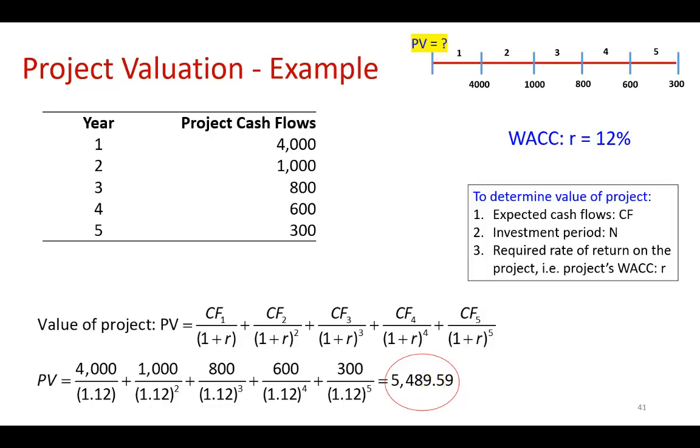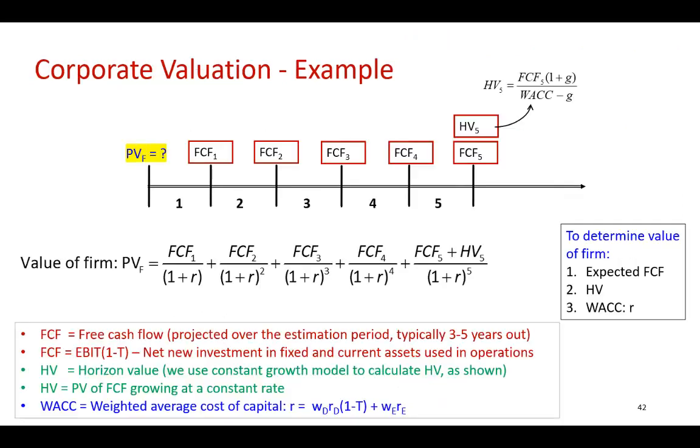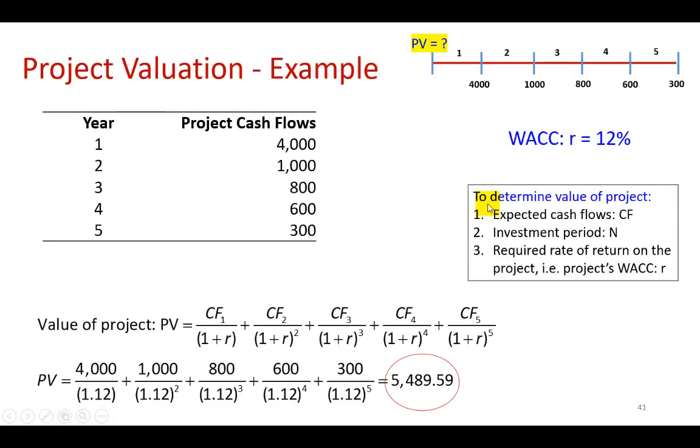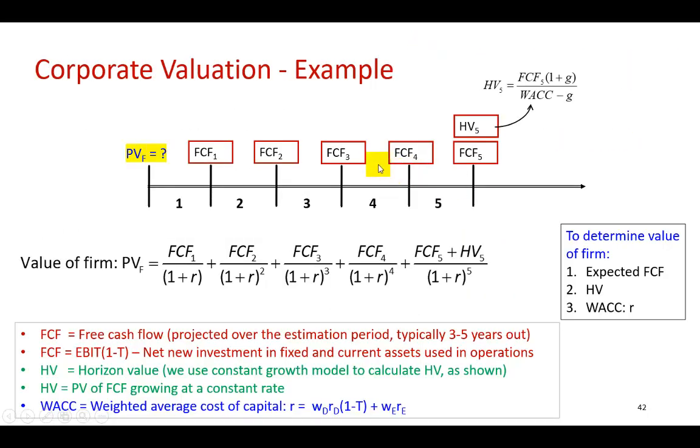All right, so that's the linear process for project selection. In corporate valuation, it's essentially the same. I've drawn out the timeline here slightly differently. Notice that my arrow goes on and on and on. And so, if I go back here, you would see that I used infinity to denote the unending stream of cash flows because a corporation is a going concern. So, we can only project free cash flows up to a certain horizon. It could be three years, four years, or in this example, five years.